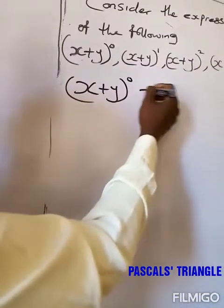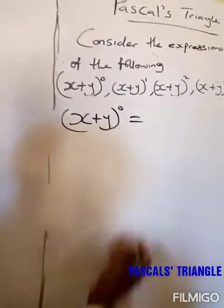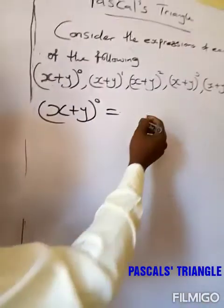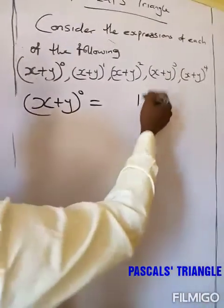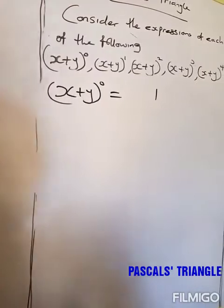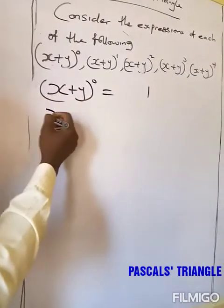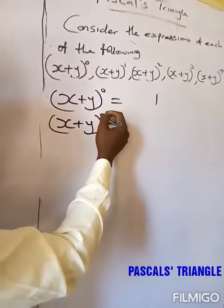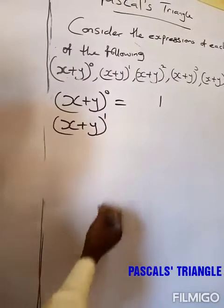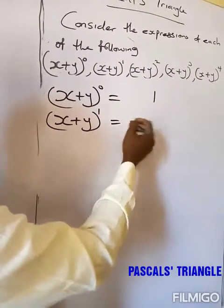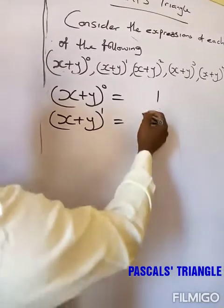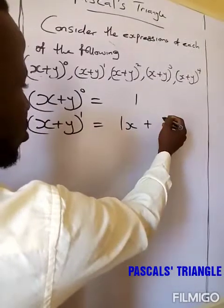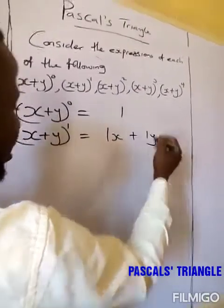Let me start with (s + y) raised to 0. If we expand this, we are getting 1. Then the next one, which is (s + y) raised to 1 — we are getting 1s plus 1y.